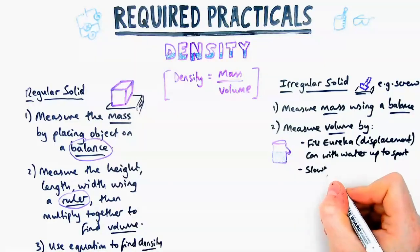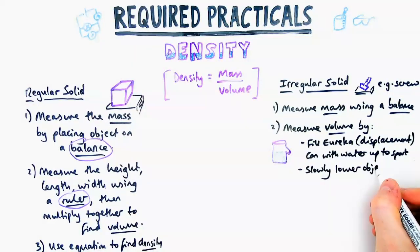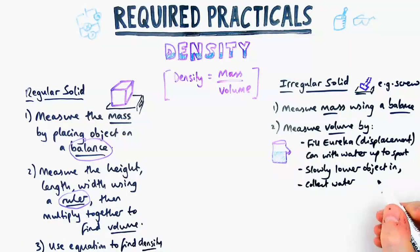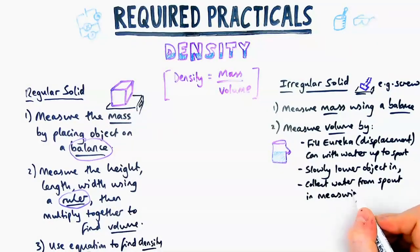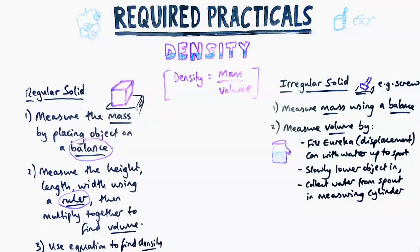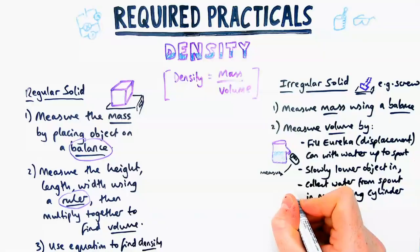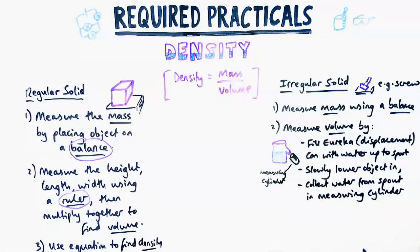Essentially, you fill the Eureka can, or sometimes called the displacement can, to just below the spout with water. That bit's really important. Then you're going to slowly lower the object into the displacement can and collect the water from the spout in a measuring cylinder. Really important: place the measuring cylinder just below the spout to collect all the drops of water that come out once you put the object in.